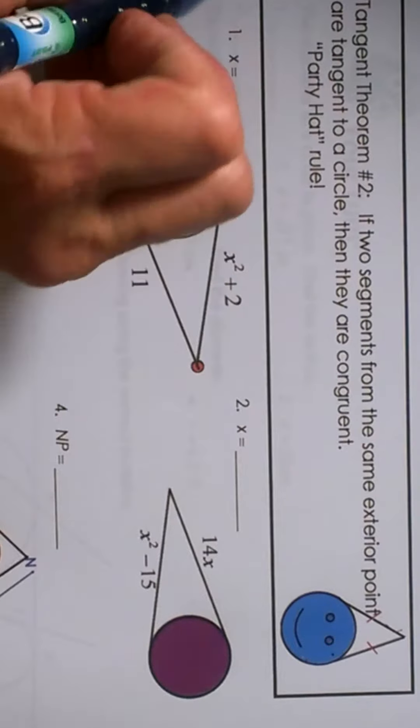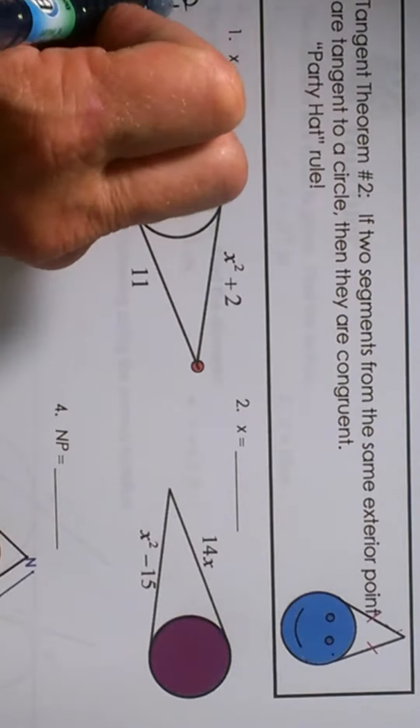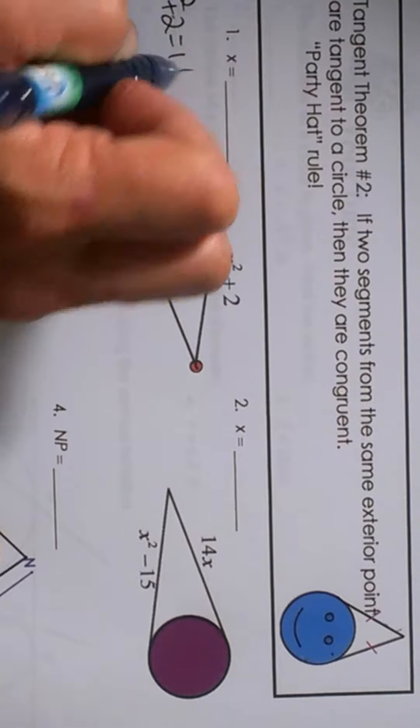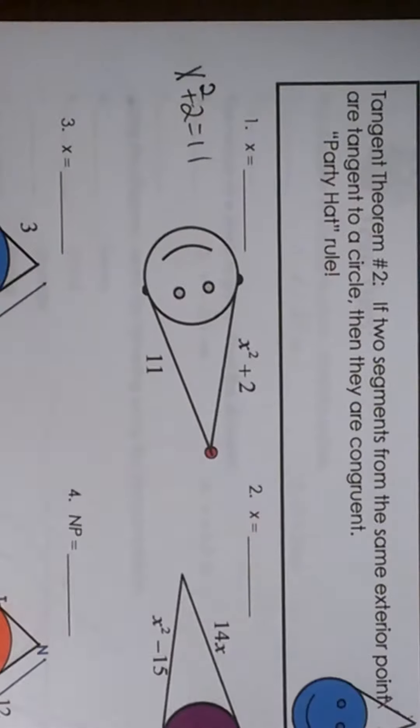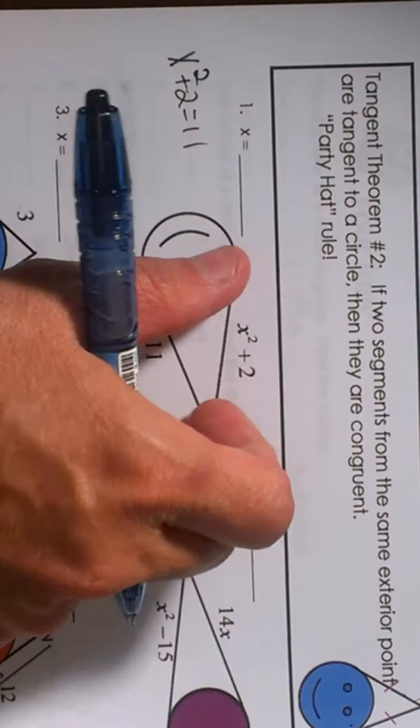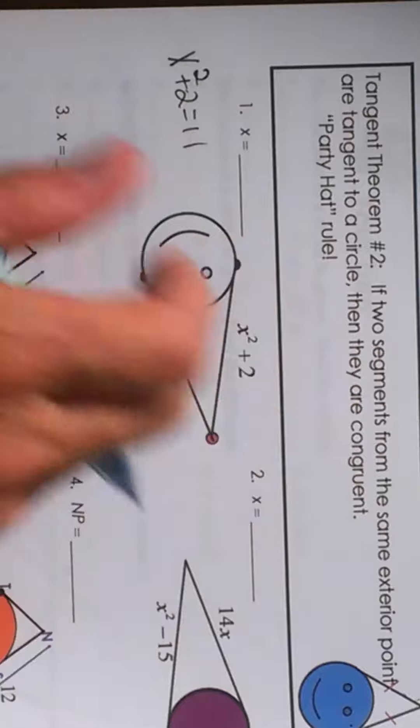So algebraically, I'm just going to set those two segments equal to each other. So we set up 11, our x squared plus 2 is equal to 11, so this segment has to be 11 too, because if that's 11, that's 11.